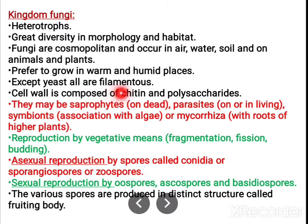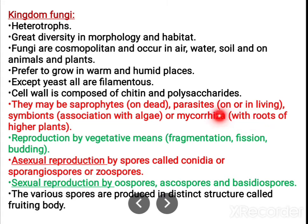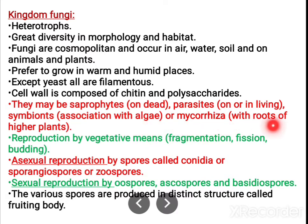Except yeast, all forms are mostly filamentous. The cell wall is made up of chitin and polysaccharides. These fungi can be saprophytes, living upon dead matter, or parasites living upon living organisms. They can be ectoparasites or endoparasites. They can also be symbionts, in association with algae or mycorrhiza, in association with roots of higher plants.